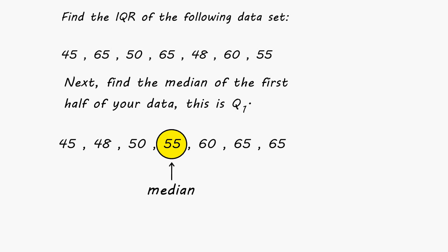After you have located the median, what you have to do is find the median of the first half of your data set. If you look at all of the numbers to the left of 55, which are 45, 48, and 50, you have to figure out what the median is of those three numbers. It is clear that 48 is in the middle of those three numbers. The median of your first half of your data is called Q1.